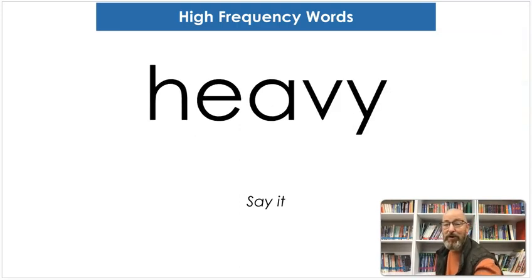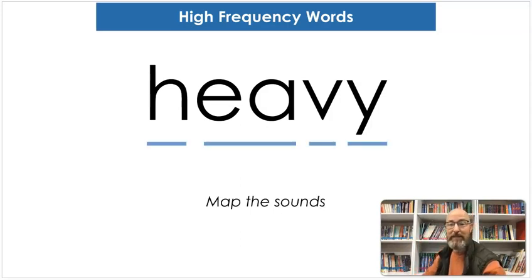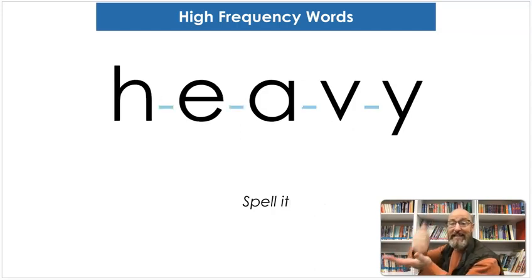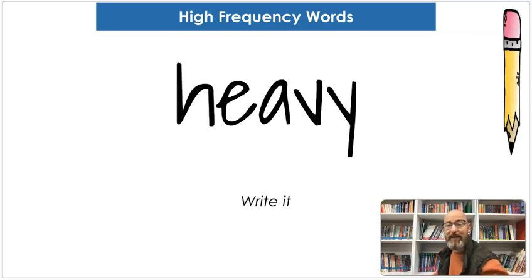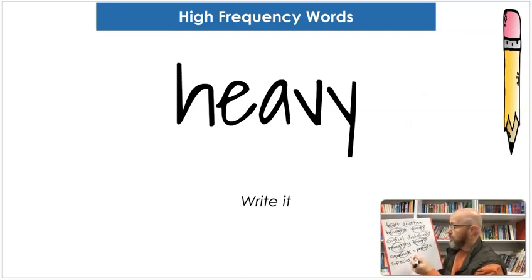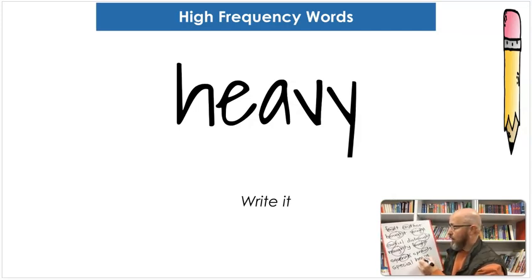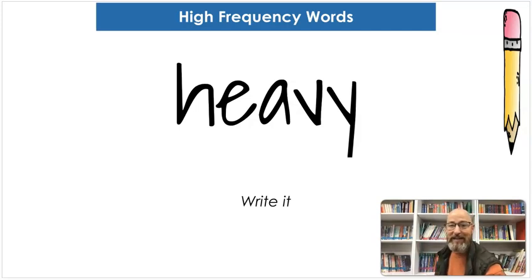And our last word is heavy. Say heavy. Map the sounds: H-E-V-E. Heavy. Spell it: H-E-A-V-Y. Heavy. And let's write it: H-E-A-V-Y. Very good — we made it to the very end. Thanks for sticking along for the whole one. Until next time, happy reading.